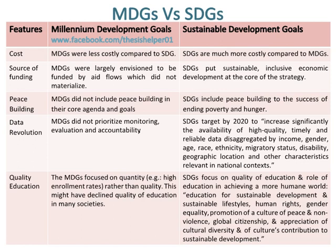MDGs did not include peacebuilding in their core agenda and goals, whereas SDGs include peacebuilding to the success of ending poverty and hunger. Data revolution in MDGs did not prioritize monitoring, evaluation and accountability. Whereas, data revolution in SDGs targets by 2020 to significantly increase the availability of high-quality, timely and reliable data disaggregated by income, gender, age, race, ethnicity, migratory status, disability, geographic location and other relevant characteristics.